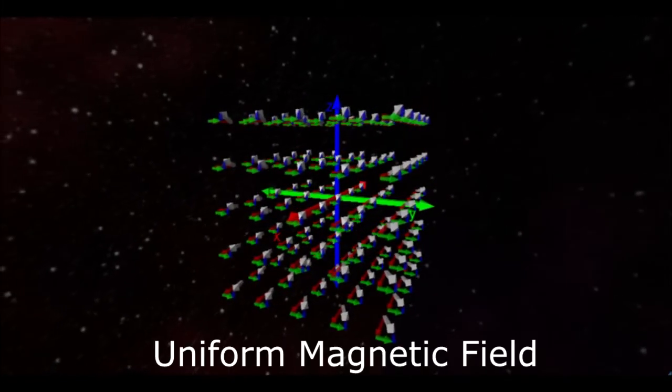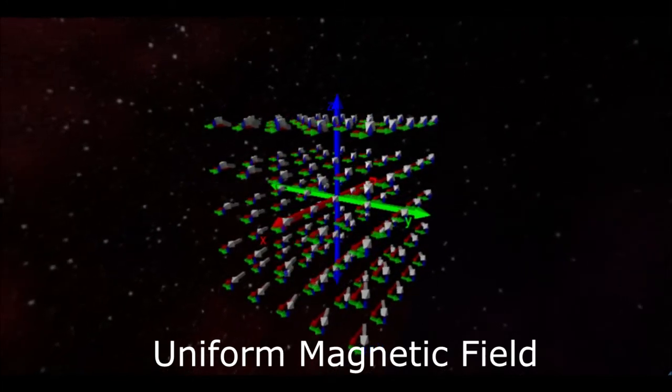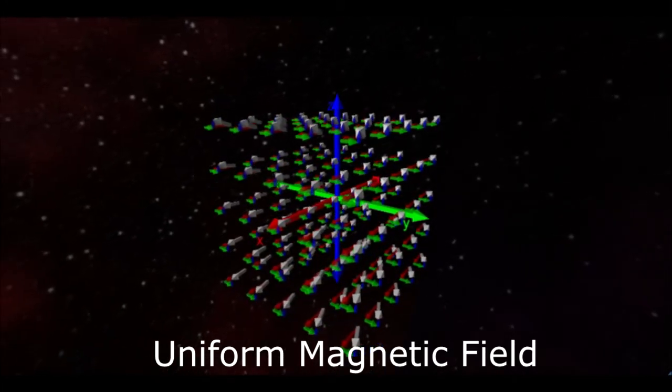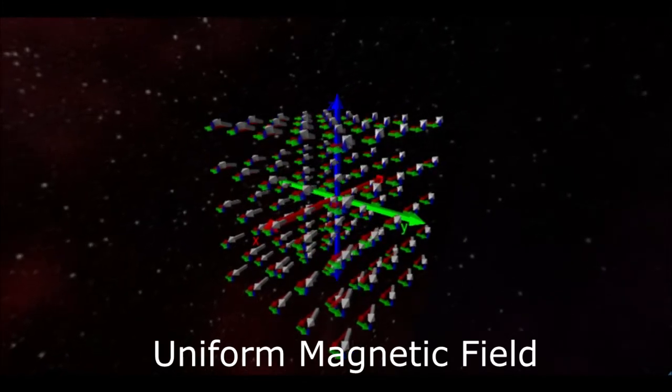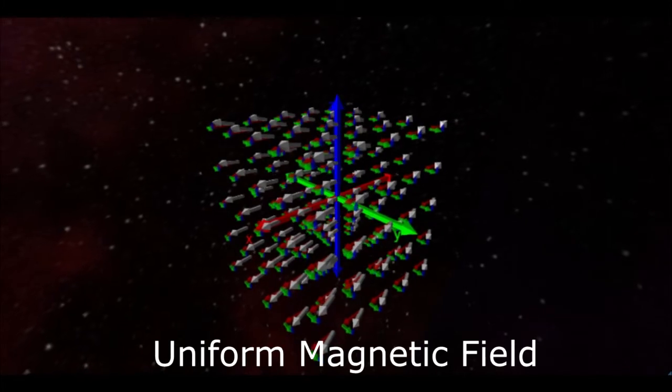On the other hand, let's suppose we turn on a uniform magnetic field like inside a permanent magnet. Now all of the field vectors are the same, and they have the same X component, Y component, and Z component. Cartesian components are best used when solving a problem by brute force or when programming a computer simulation.